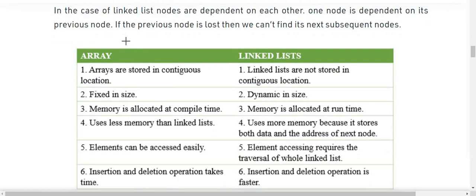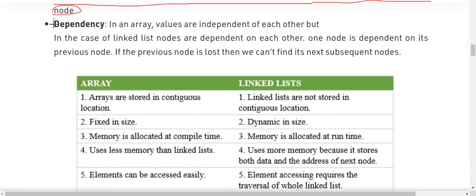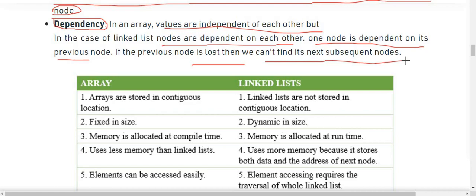Now comes the dependencies. In array, values are independent of each other. But in case of linked list, nodes are dependent on each other. One node is dependent on its previous node and that previous node is dependent on its previous node, and so the line goes on. So if the previous node is lost then we can't find its next subsequent nodes.